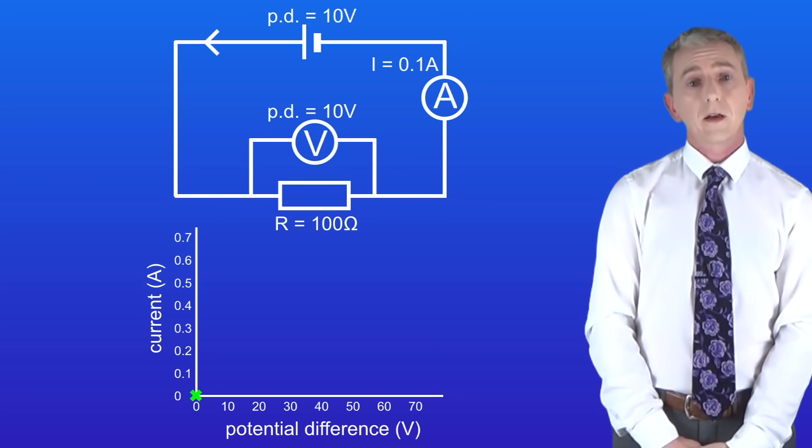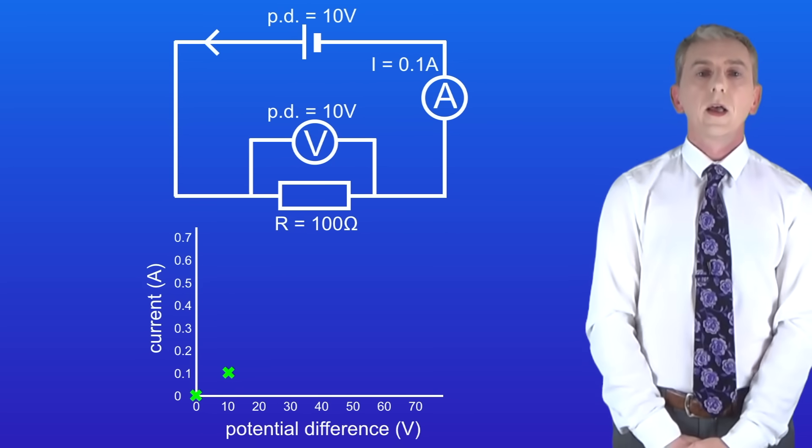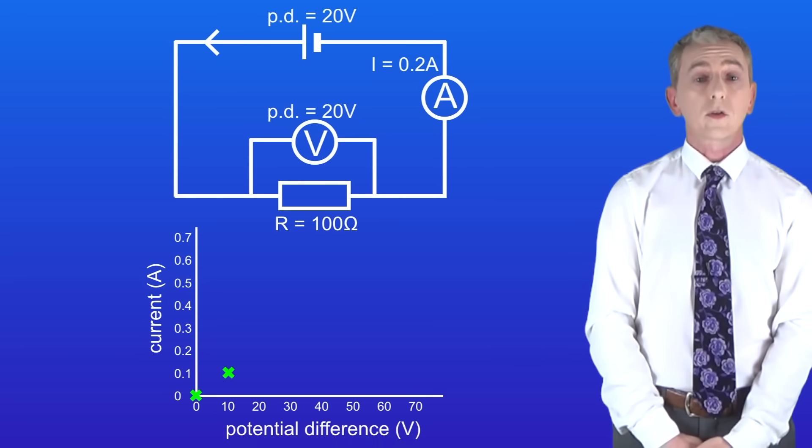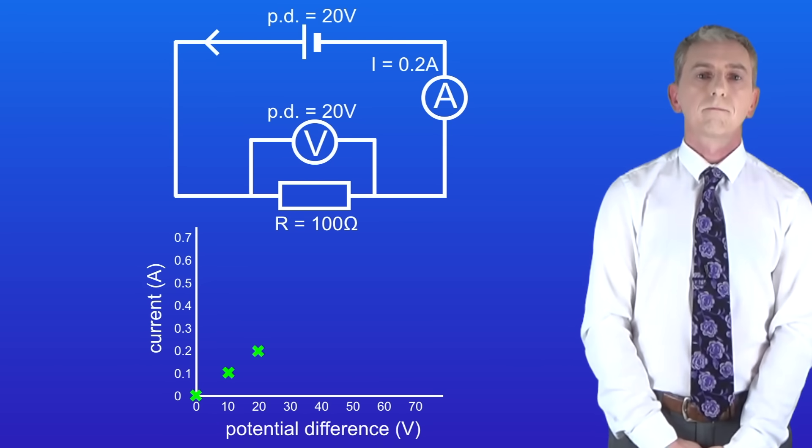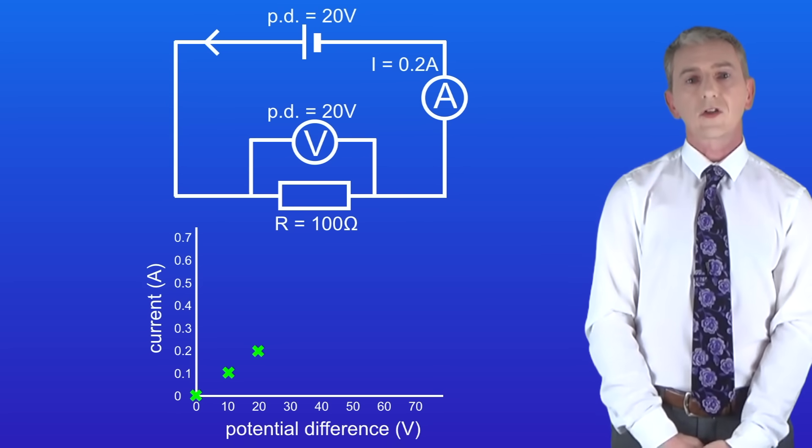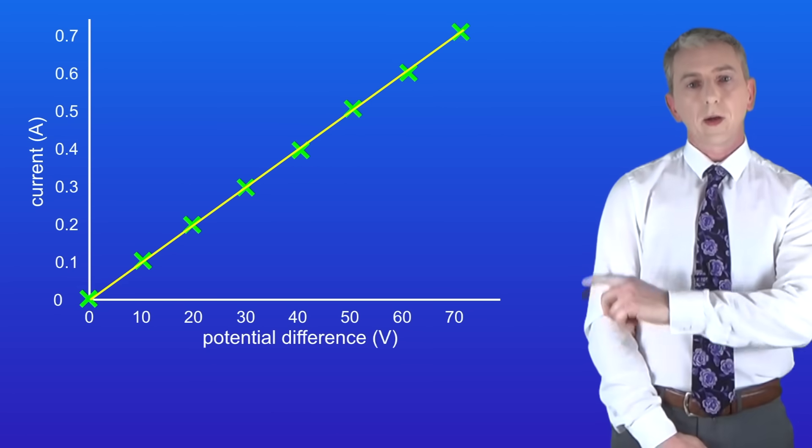Increasing the potential difference to 10 volts gives us a current of 0.1 amperes and here it is on the graph. Increasing the potential difference to 20 volts gives us a current of 0.2 amperes and again here it is on the graph. Now I'm going to keep increasing the potential difference by 10 volts each time and plotting the current on the graph. So here are my final results.